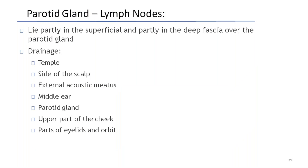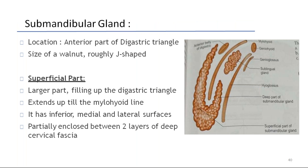Coming to lymph nodes: parotid lymph nodes lie partly in the superficial and partly in the deep fascia over the parotid gland. They drain the parotid gland and also receive drainage from the temple, side of the scalp, external acoustic meatus, middle ear, parotid gland, upper part of the cheek, and parts of the eyelids and forehead.